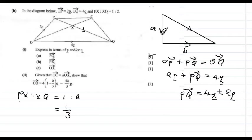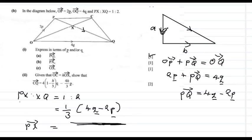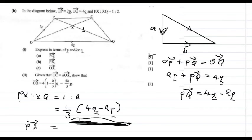So PX should be multiplied by one third of PQ, because the ratio 1 to 2 means the total parts are 3, and PX is 1 part out of 3. Therefore PX equals one third of PQ, which is one third of (4q minus 2p). So the answer for PX is one third times (4q minus 2p).